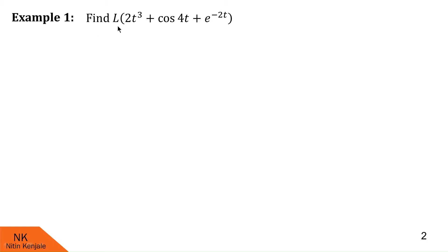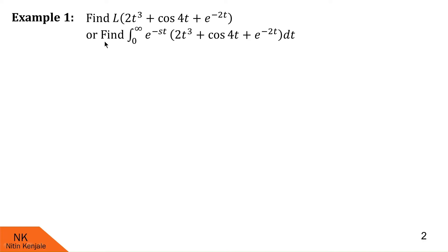We are asked to find Laplace of 2t³ + cos4t + e^(−2t). This question can also be asked as: find the value of the integral from 0 to infinity of e^(−st) into 2t³ + cos4t + e^(−2t) dt. We know this is nothing but the integral definition of Laplace of f(t), where f(t) = 2t³ + cos4t + e^(−2t).